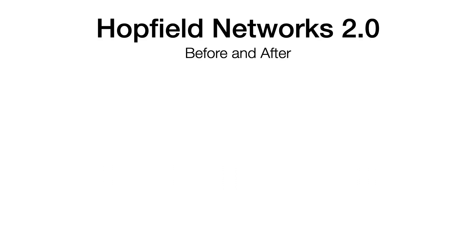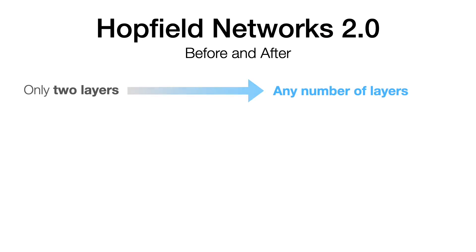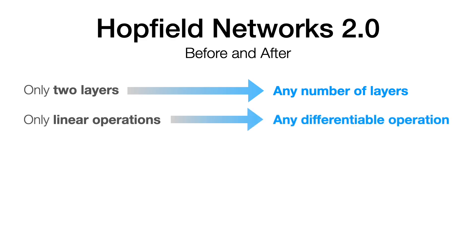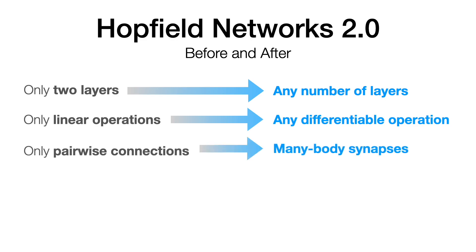Before, Hopfield networks were limited to being two layers. Now, they can be any number of layers. Before, they consisted of only linear operations, like dense matrix multiplications, and now they can be any differentiable operation. Before, they could have only pairwise connections — that is, a synapse could only relate two layers. Now, a synapse can relate any number of layers.